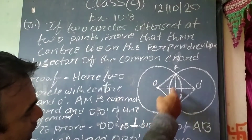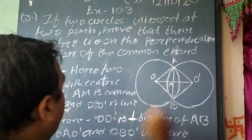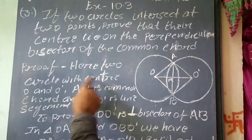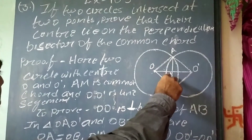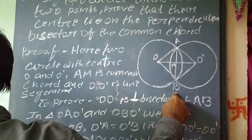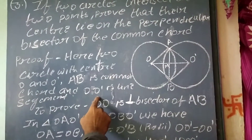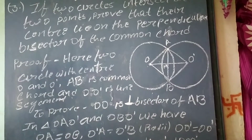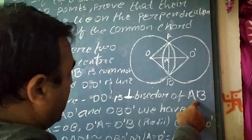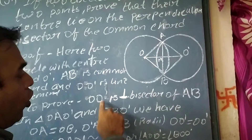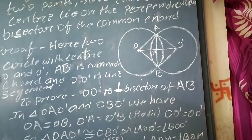Here, two circles: circle number 1 with center O, and circle number 2 with center O dash. So here two circles with centers O and O dash. AB is the common chord, and O O dash is the line segment. So we have to prove that O O dash is the perpendicular bisector of AB.